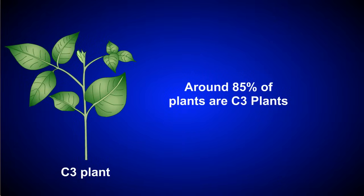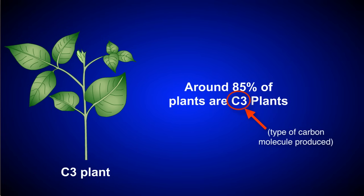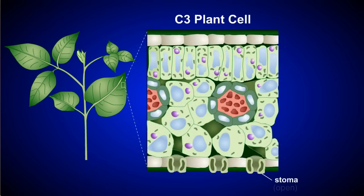Most plants, around 85% or so, carry out C3 photosynthesis. The name C3 has to do with the type of carbon molecule produced during the process. C3 photosynthesis occurs in the mesophyll cells of the C3 plant, which are located just under the surface of the leaves and other tissues.